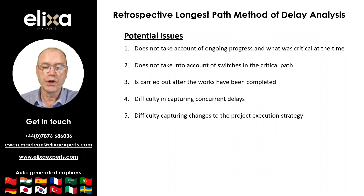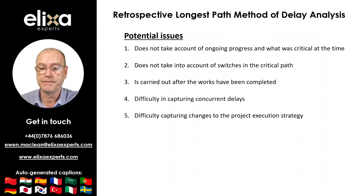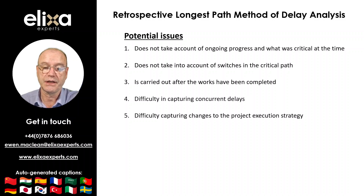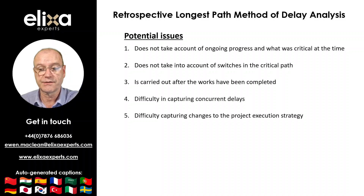If the works are resequenced or re-baselined during the works, then the retrospective longest path method of analysis may not adequately capture changes in the project execution strategy at the time. This can potentially lead to an inaccurate assessment of the critical path and delay to the project by not taking account of changes in the critical path at the time, since the retrospective longest path is identified solely at the end of the project.